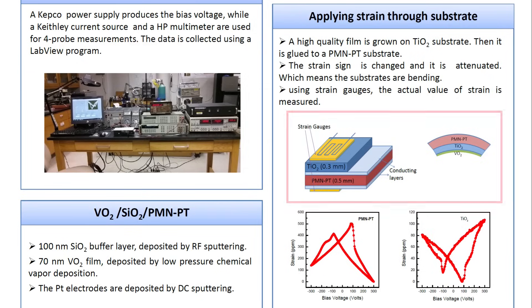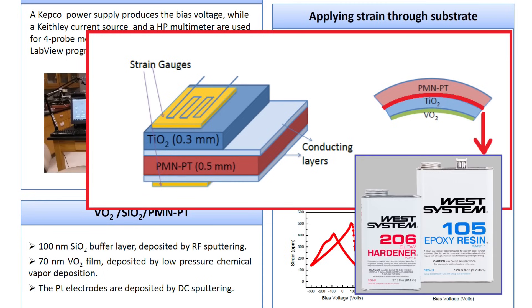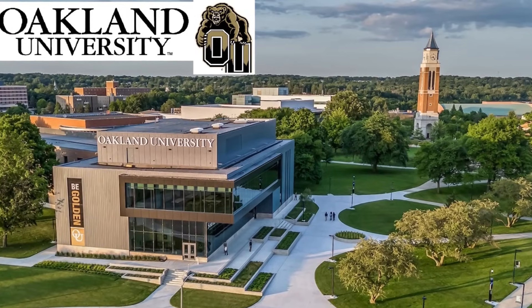The method I designed is simple and applicable to any type of film. It can adjust strain and reverse it as many times as needed. In this method, we attach the sample to a piezoelectric substrate using epoxy. By applying a voltage to the piezoelectric element, strain is generated and transferred to the sample.